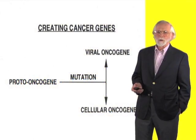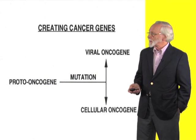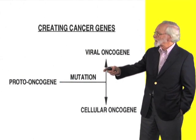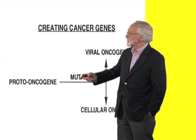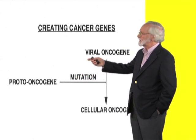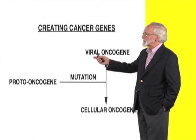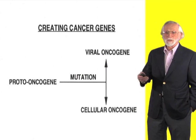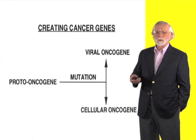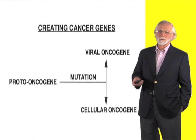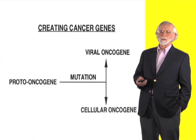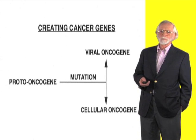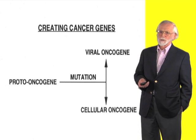This led to a larger hypothesis. If a change in a proto-oncogene can create a viral oncogene, why could not the same sort of thing occur within the cell without the intervention of a virus? Why couldn't proto-oncogenes become the progenitors of cellular oncogenes?